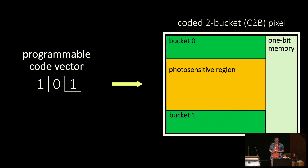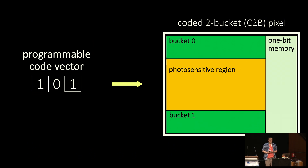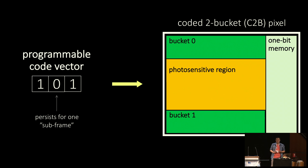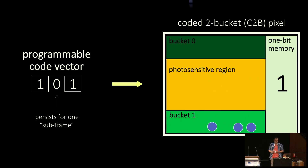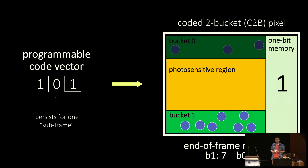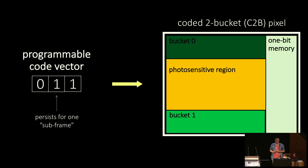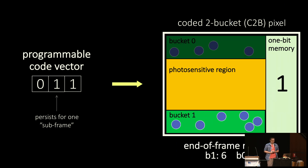The sequence of bucket activations is controlled by a binary vector whose length and contents are programmable. Each bit represents an equal slice of the frame's exposure time, which we call a subframe. By changing the code vector, we change how the pixel accumulates light into the two buckets. So light is never blocked, just sorted into buckets.